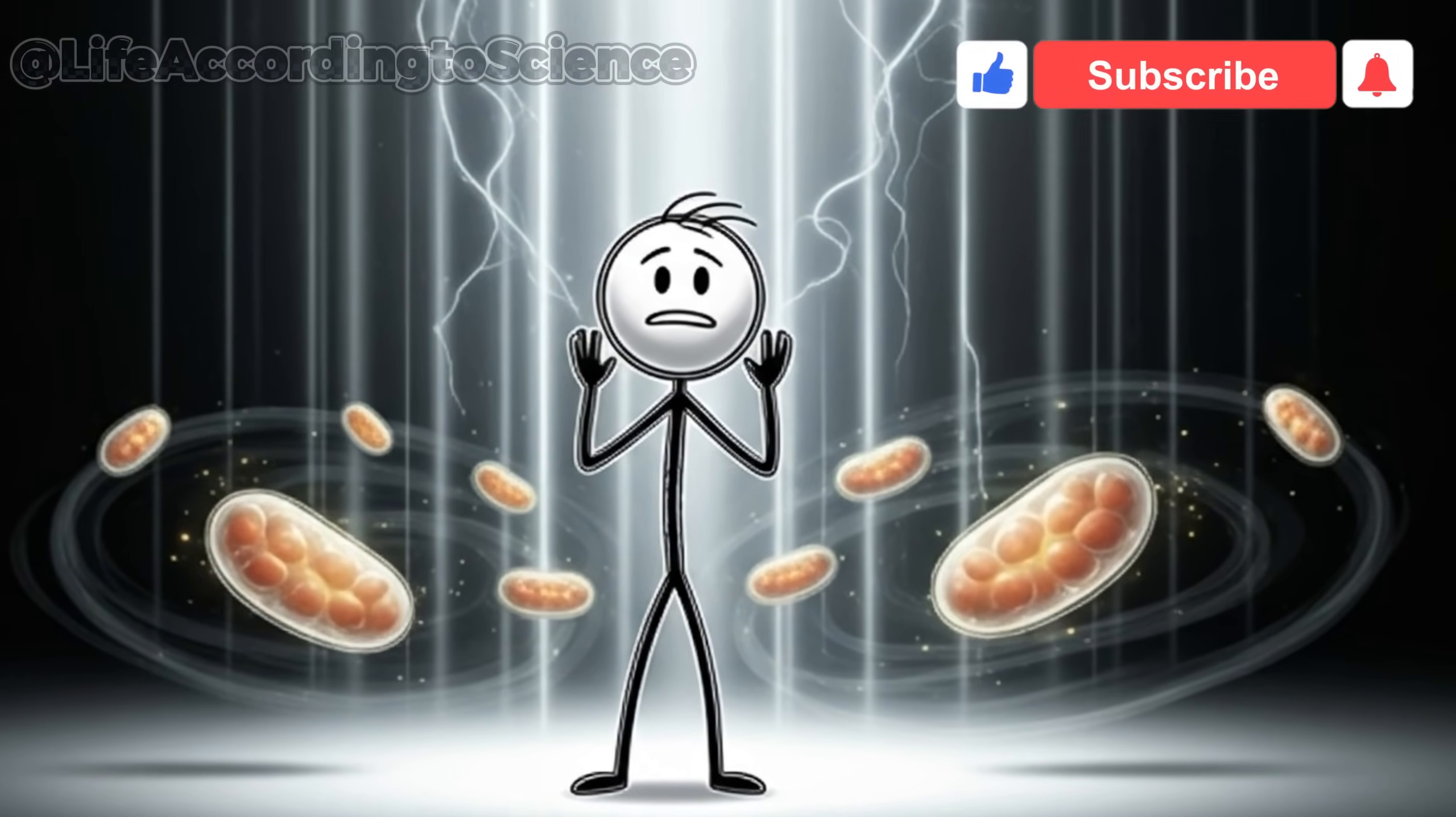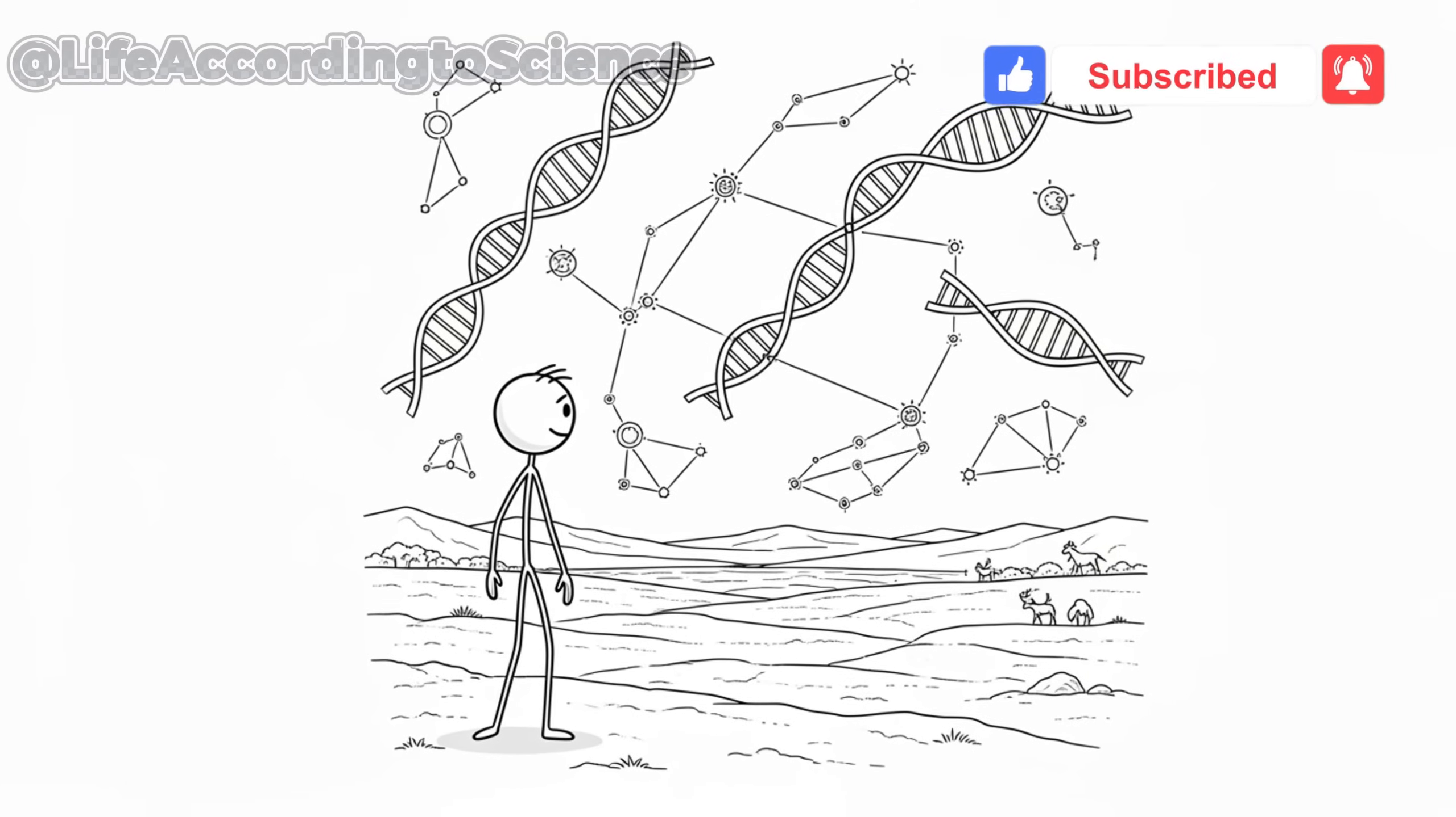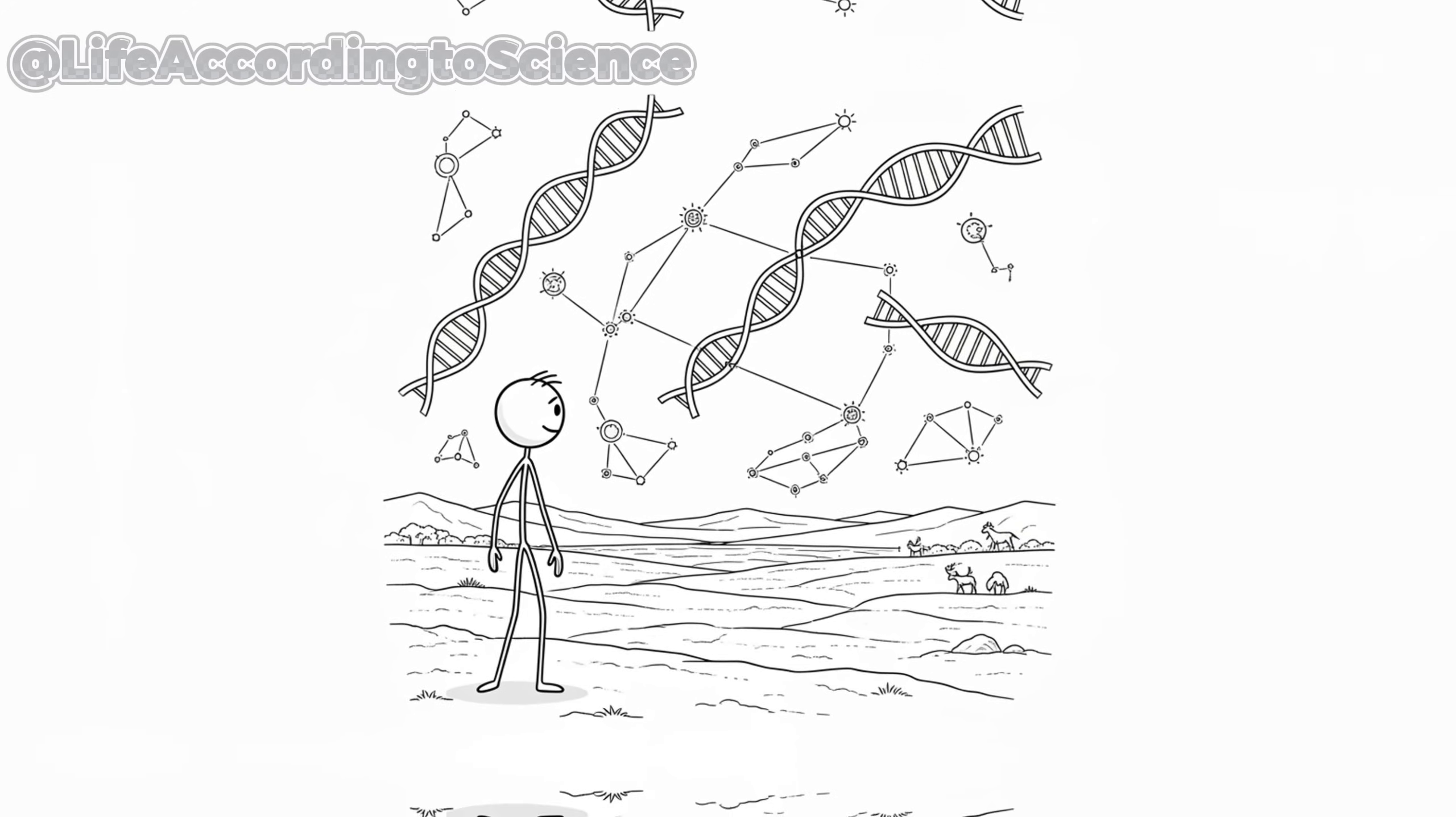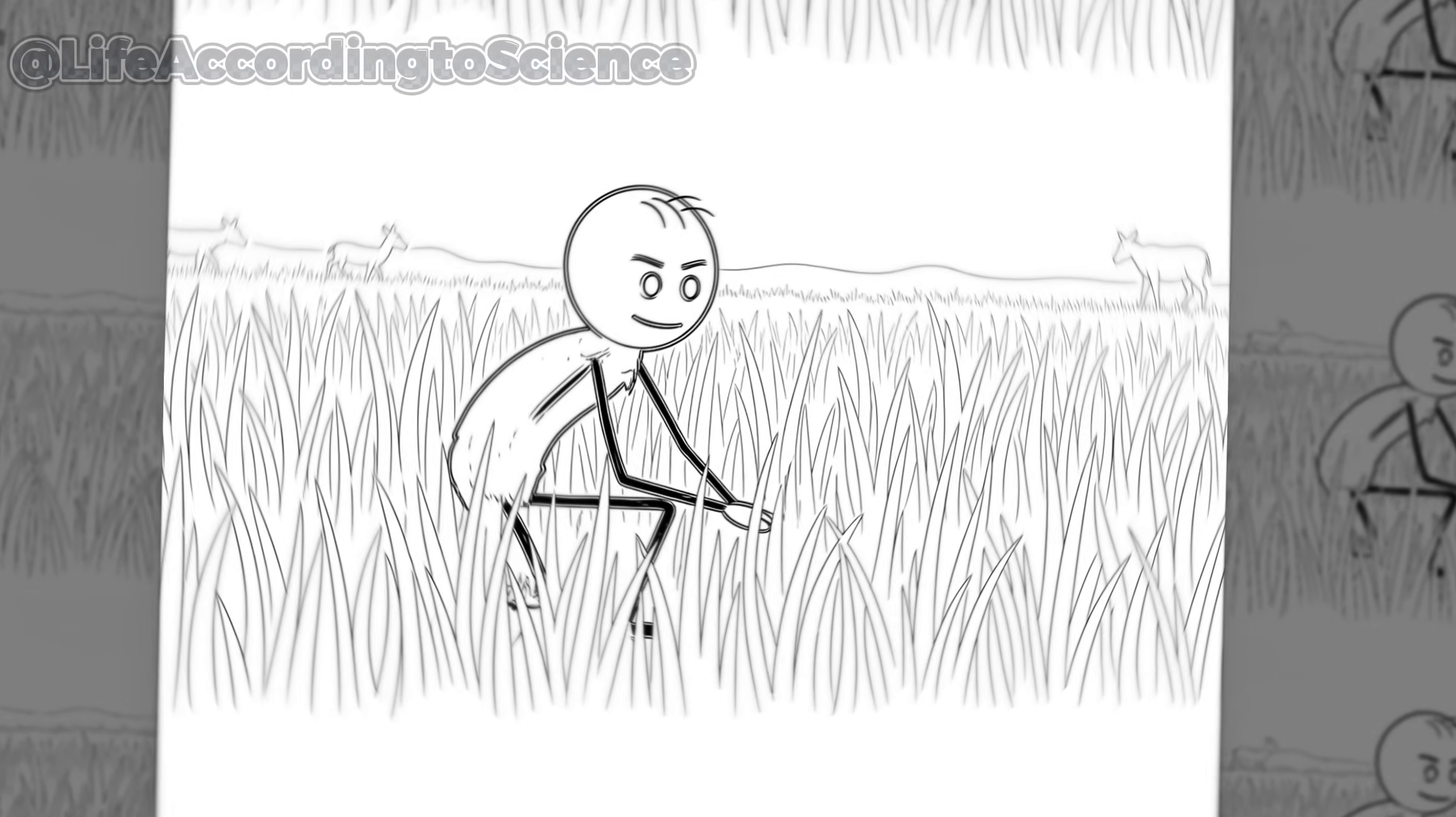The answer lies in evolutionary design. Your ancestors couldn't afford to collapse during famine. They had to stay sharp enough to hunt. Your metabolism now runs on pure efficiency.